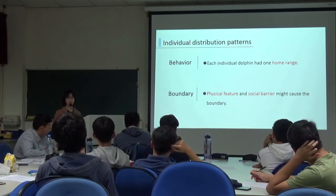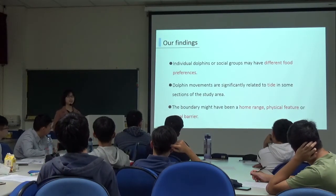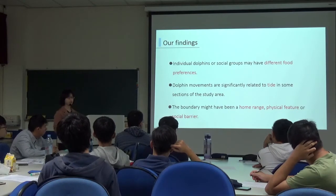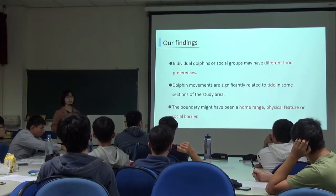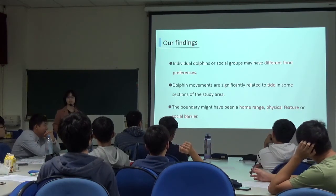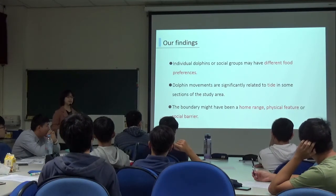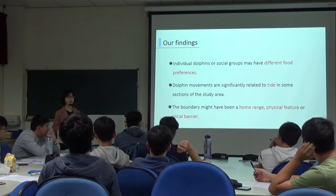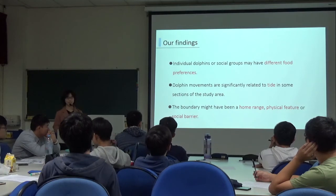I hope I made my points clear. Now it's time to conclude. First, individual dolphins or social groups may have their own food preferences. Second, tidal and dolphin movements were significantly related in some sections of the study area. Last but not least, the different distribution might be caused by their own home range, physical features such as channels or bays, or social barriers. Thank you for your attention.